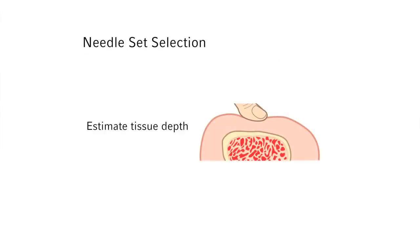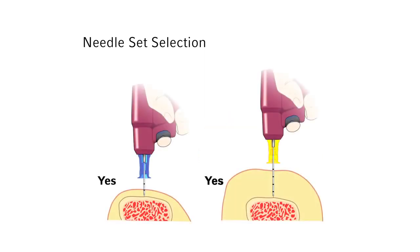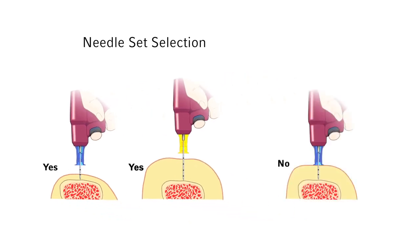Press your thumb or finger over the insertion site to estimate the depth of soft tissue. With the needle set tip touching the bone, the 5 mm mark must be visible above the skin for confirmation of adequate needle set length prior to drilling. If the needle set is inserted through the soft tissue and does not reach the bone, or the 5 mm mark is not visible above the skin with the tip touching the bone, the needle set is too short. A longer needle set or alternate site should be chosen prior to penetration of the bone cortex.